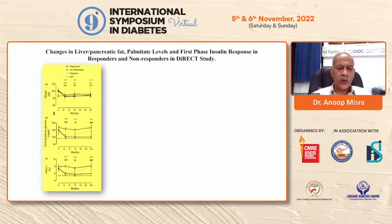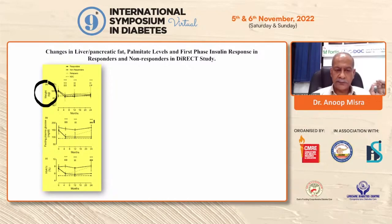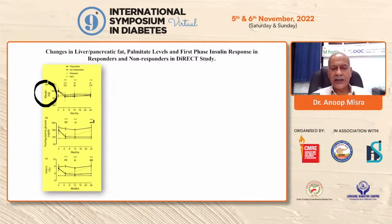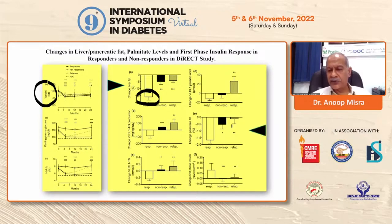This was replicated in the DiRECT study. While weight decreased in most participants, fasting plasma glucose decreased in many but not all — there were responders, non-responders, and relapsers. Looking at hepatic and pancreatic fat in these three groups: responders showed marked decreases in liver fat; non-responders and relapsers did not. Similarly for pancreatic fat — in relapsers there was hardly any decrease in pancreatic fat.